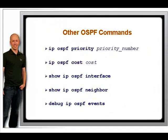There are two optional commands that you should be familiar with for the CCNA exam. These commands, configured under the interface, are IP OSPF Priority and IP OSPF Cost. IP OSPF Priority is used to change the priority of an interface for the DR-BDR election. IP OSPF Cost is used to manually change the cost of an interface.